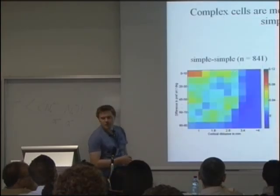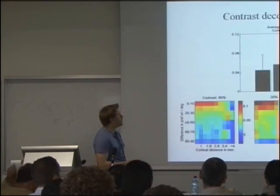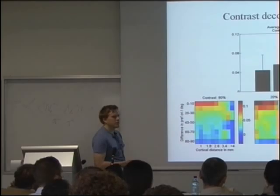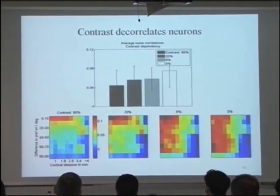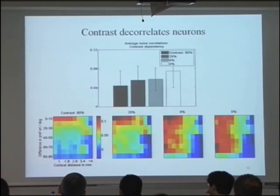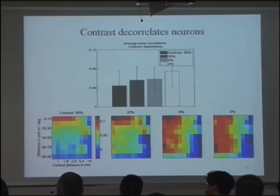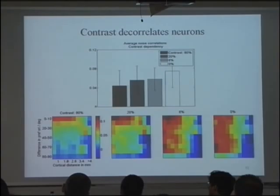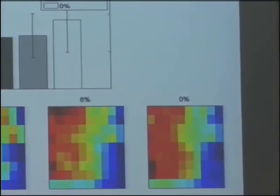Now splitting the population into simple and complex cells: complex cells are more noise-correlated than simple cells, especially across the orientation domain. For similarly tuned cells, contrast modulates noise correlation only modestly. But for cell pairs with dissimilar orientation tuning, contrast modulates their noise correlations quite strongly — from spontaneous activity down to 80% contrast there is a gradual decrease. I also checked the Fano factor dependence on contrast, and the Fano factor drops with contrast.